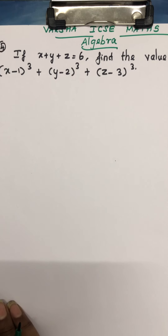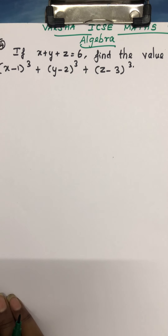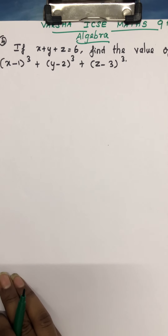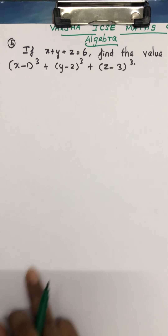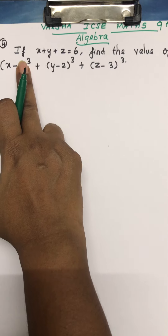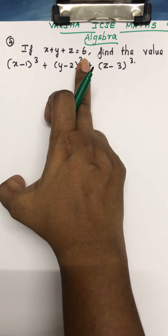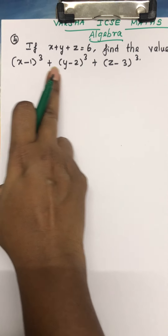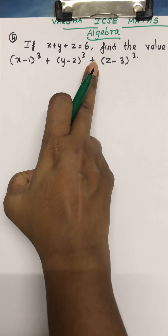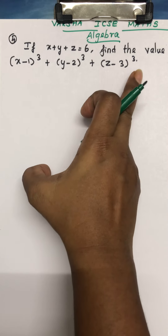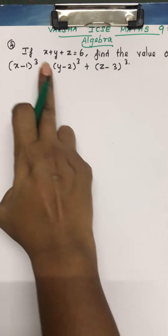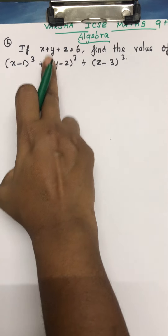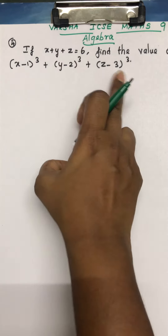Welcome students, this is Varsha, ICSE Maths 9th standard, from the lesson Algebra. This is the 4th question: if x + y + z = 6, find the value of (x−1)³ + (y−2)³ + (z−3)³. Here, x + y + z = 6 is given, and from this we have to find the value of that expression.